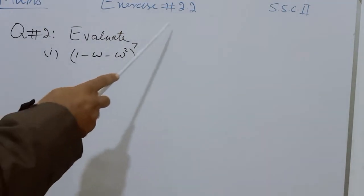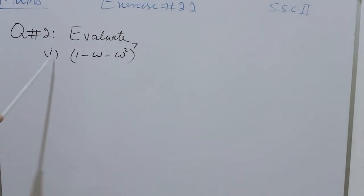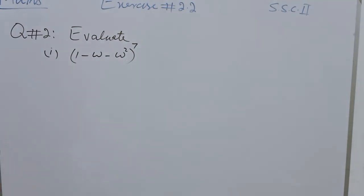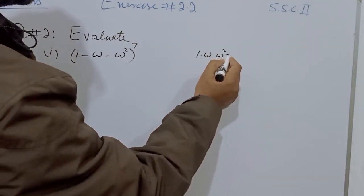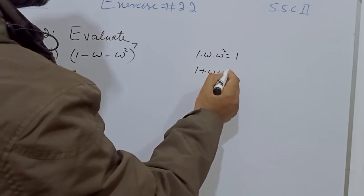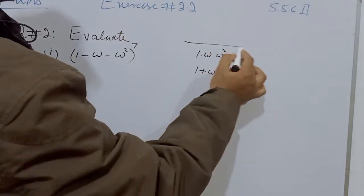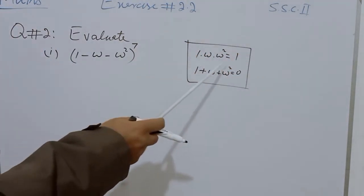In Exercise 2.2, Question number 2, we have evaluated and the first part is (1 minus omega minus omega squared) to the power of 7. The cube root of unity has two properties: 1 times omega times omega squared equals 1, and 1 plus omega plus omega squared equals 0. Keep these two properties of the cube root of unity in mind.